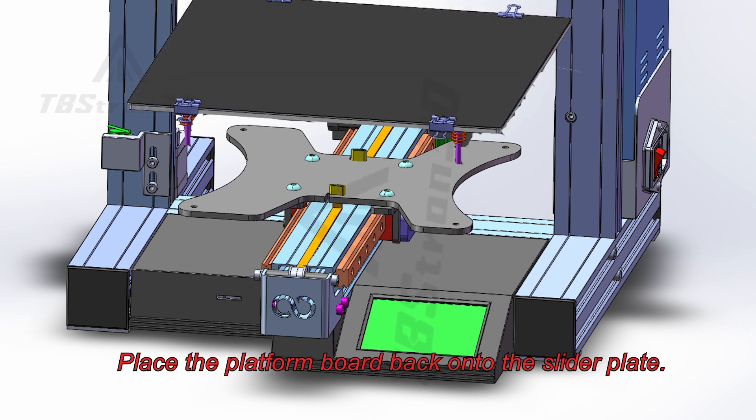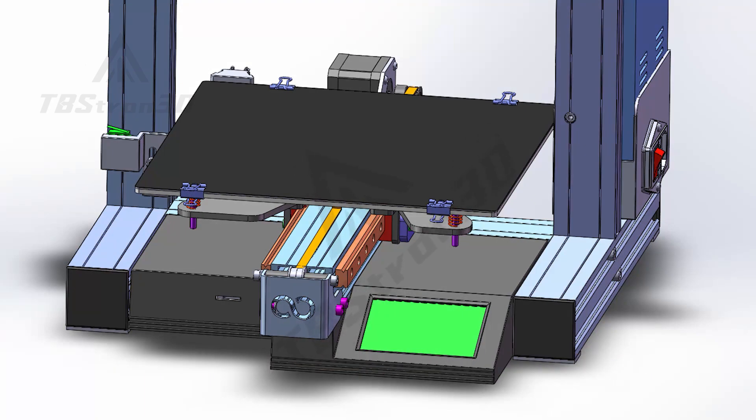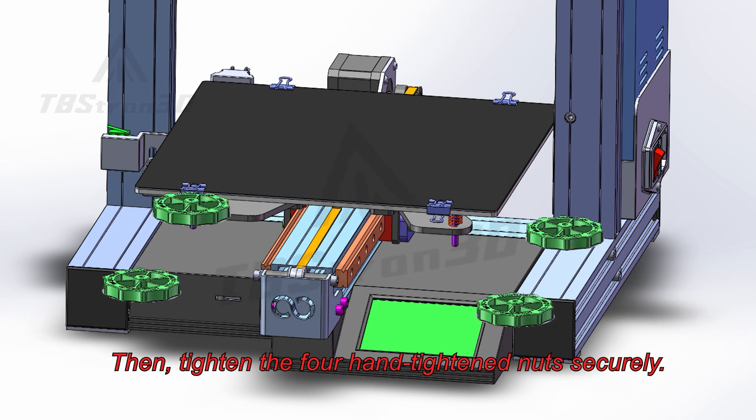Place the platform board back onto the slider plate. Then, tighten the four hand-tightened nuts securely.